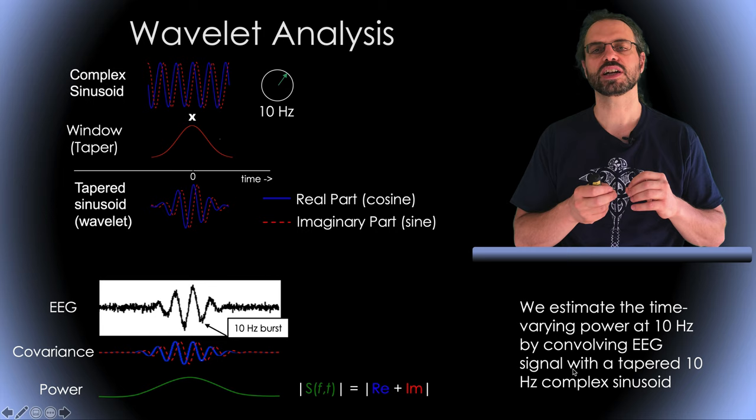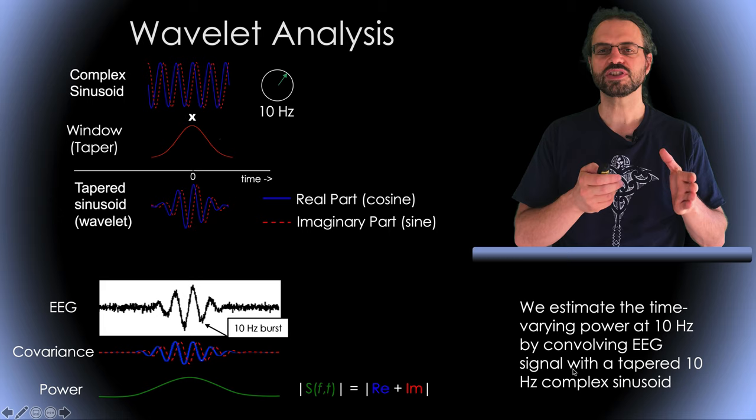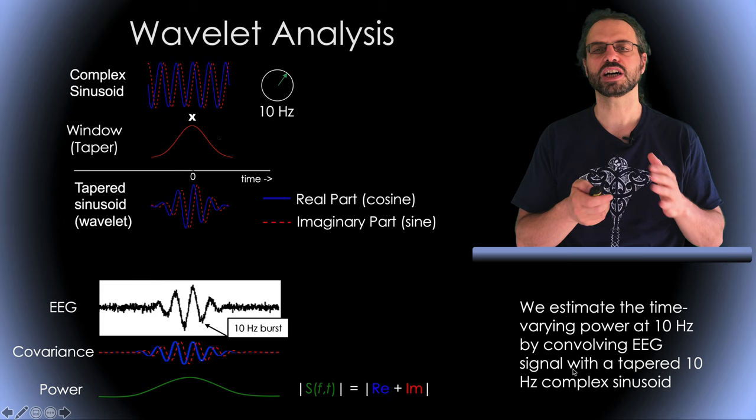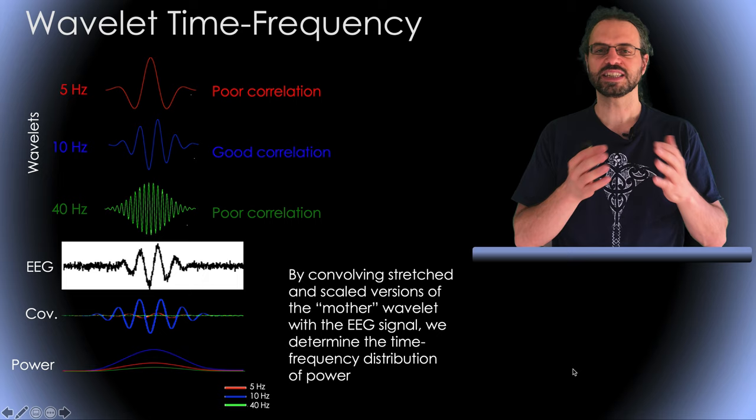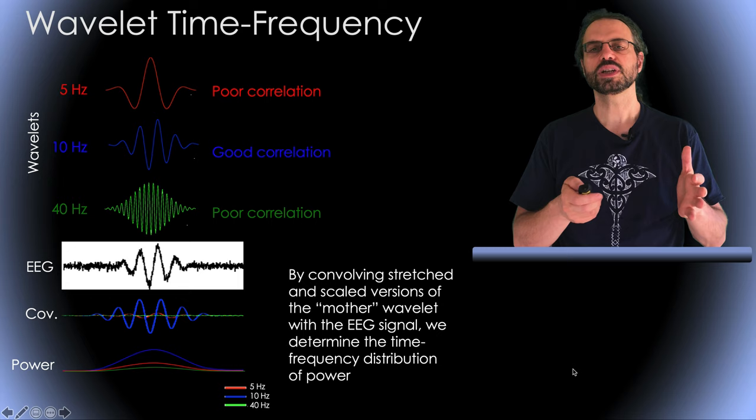This gives us at each time point an estimate of the spectral power in the signal at that frequency. The advantage is that we can design the wavelet at each frequency to be diffused or well localized in time to optimize the trade-off between time and frequency resolution.